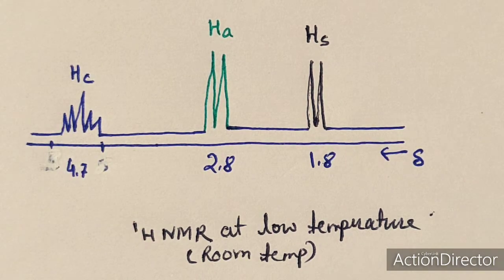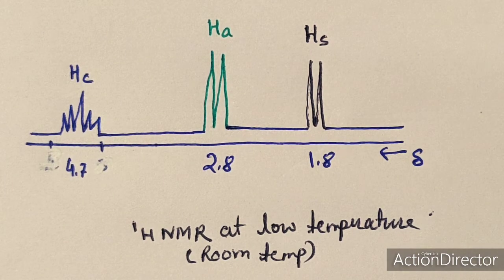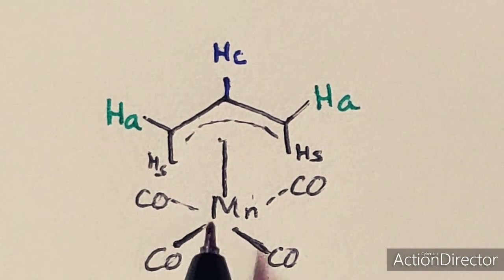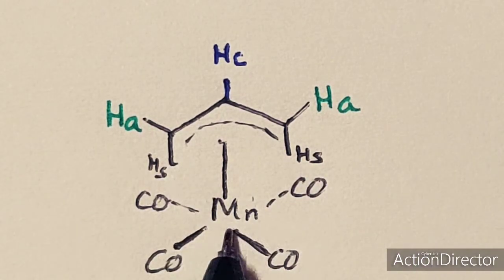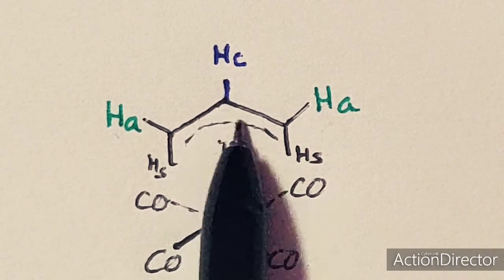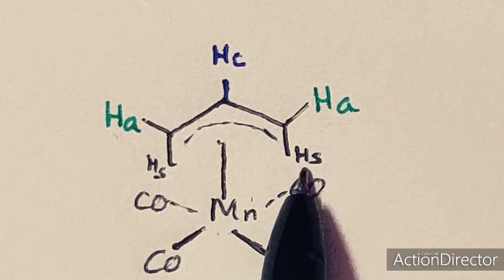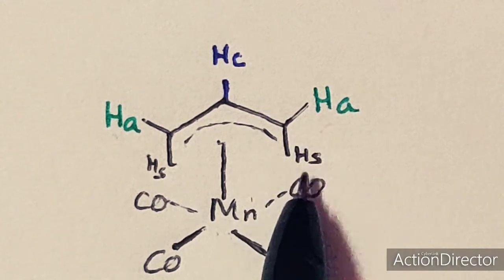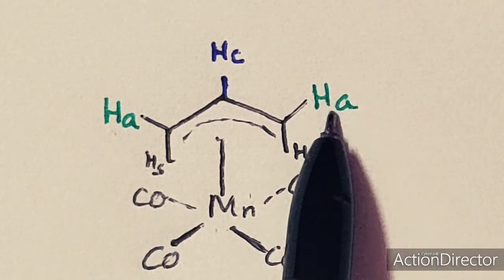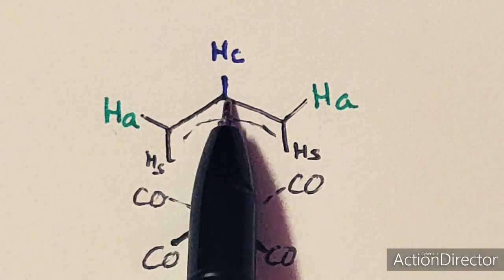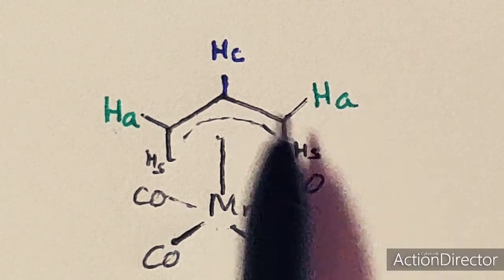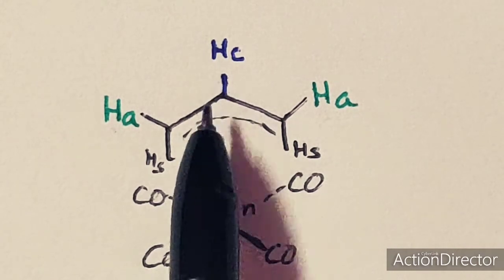Here again is the structure of the compound whose 1H NMR is taken at low temperature. The HS atoms are syn to this metal center, the HA atoms are anti to this metal center, and H is present at the central carbon atom. HA will couple with HC, showing a doublet, and HS will also couple with HC, showing a doublet. So there will be two doublets — one for HA and one for HS — and one quintet for the central hydrogen atom, because it couples with all four hydrogen atoms.